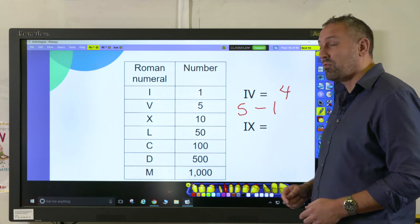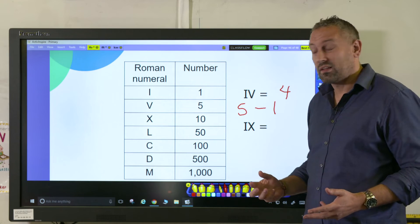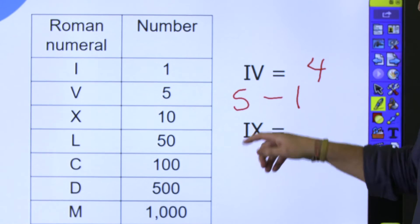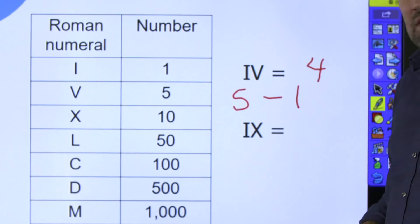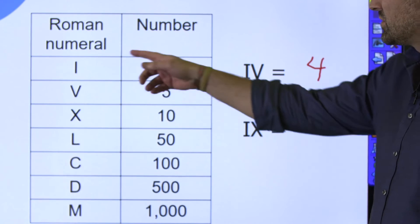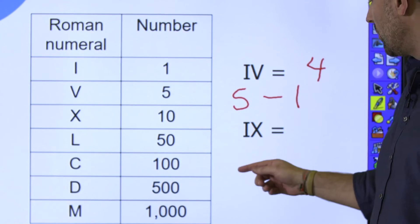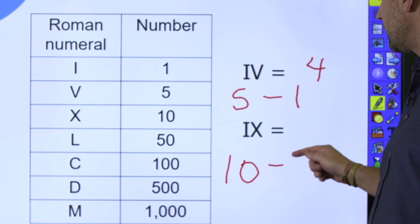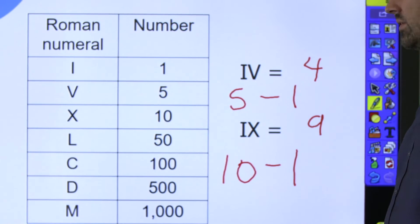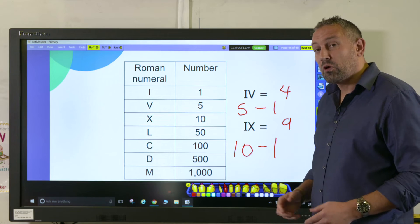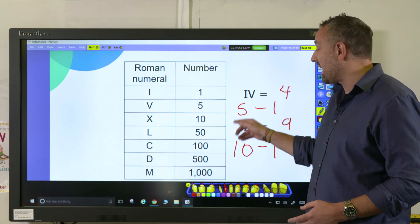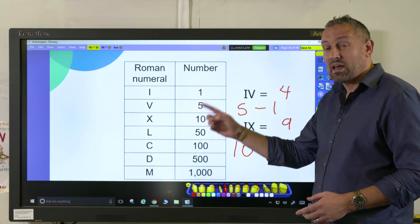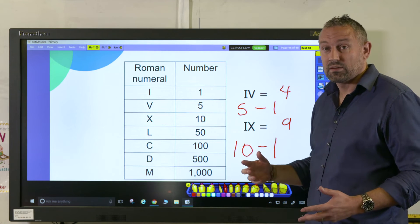One before five is four. And here you have I and X — the one before 10, or 10 minus one — which equals nine. It's worth pointing out that X, I would be 11, because it is one after 10.